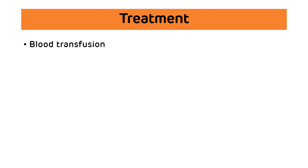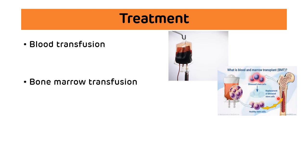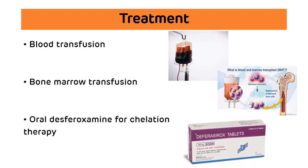Treatment: the mainstay of treatment is frequent blood transfusion, as patients will have severe anemia. The second option is bone marrow transplant. To avoid iron overload caused by frequent blood transfusions, an iron chelating agent in the form of oral desferrioxamine is also given to prevent iron overload in thalassemia.